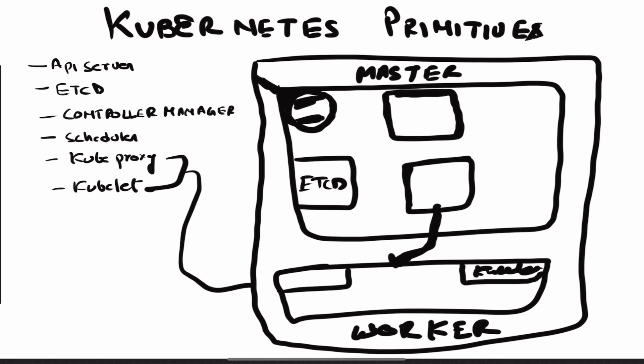The last component is kubeproxy. On a worker node you can have multiple containers running, and if these containers want to talk to each other, that is taken care of by kubeproxy. Kubeproxy makes sure that the necessary rules are in place for containers on a worker node to communicate with each other. That is the function of kubeproxy.